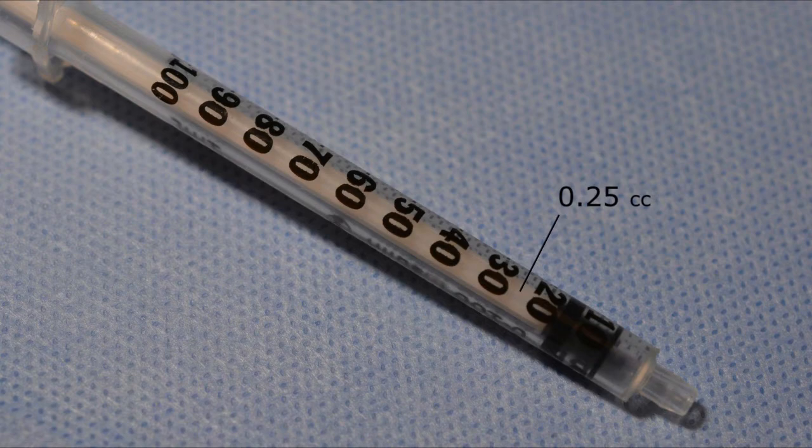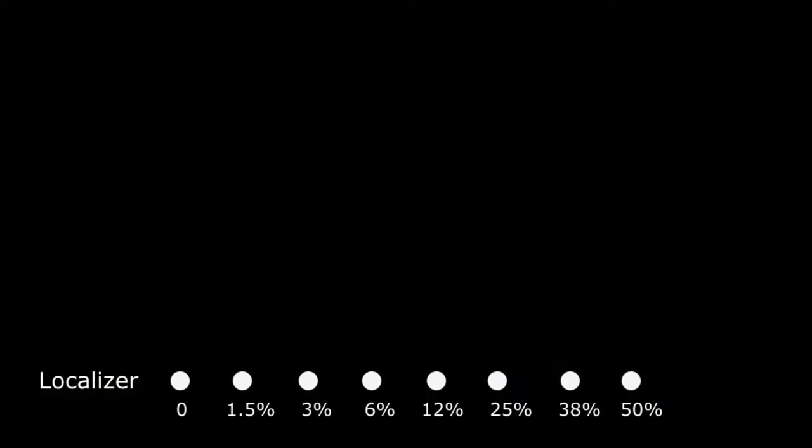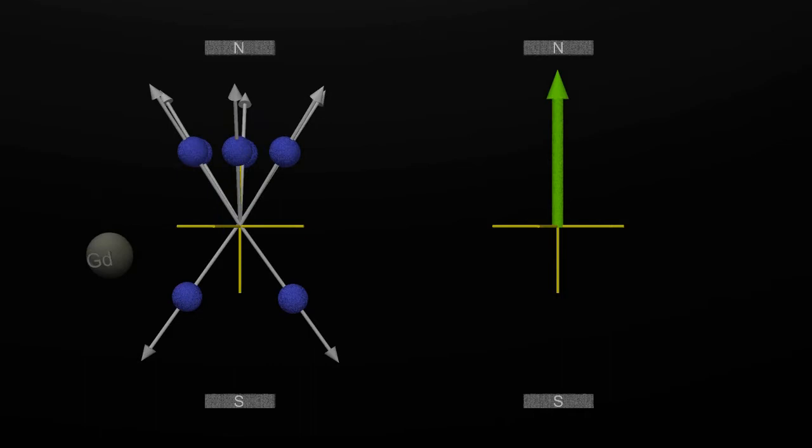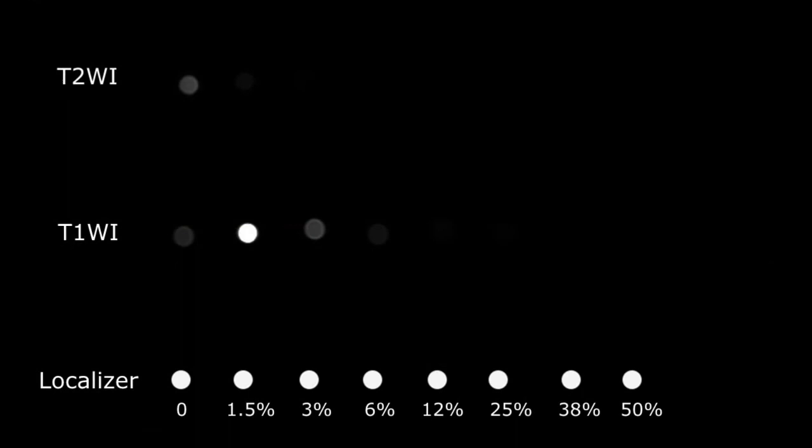We then put the filled tubes and plastic holders in the MR scanner and imaged the tubes with T1 and T2 sequences. These are the localizer, T1, and T2 sequences. Notice the maximum T1 signal is in the second test tube at 1.5 percent. At this concentration, the paramagnetic gadolinium atoms return the protons to their baseline state and produce a strong T1 signal. But these effects are dose limited and as the concentration of gadolinium goes up, we actually get the opposite effect.